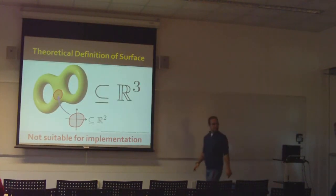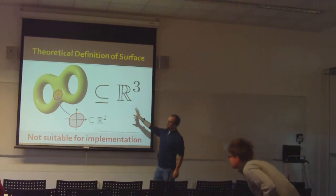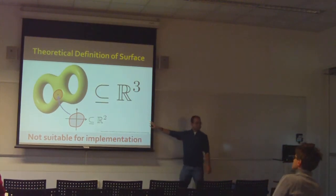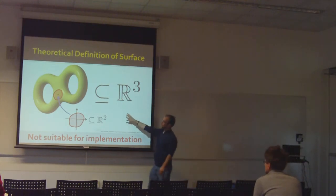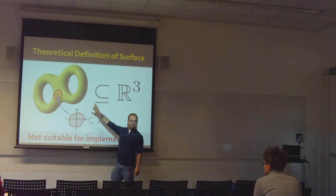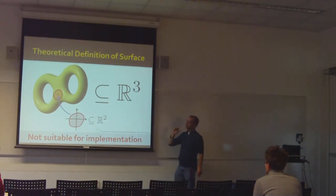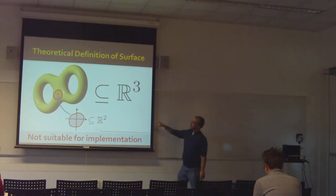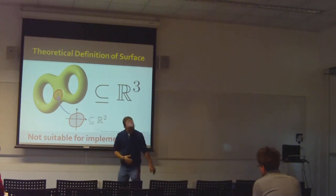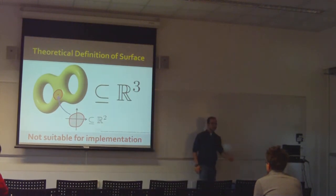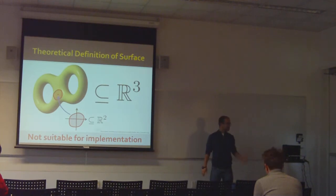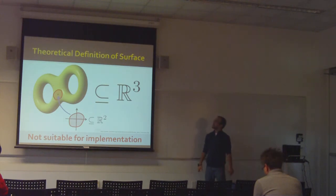You'll recall from the last couple classes that we've gone through in a lot of detail a theoretical definition of a surface. There are lots of different ways of thinking about this definition. One that I kind of like is: a surface is a subset of three-space where locally, at each point, the surface looks like two-space. At each point on this double torus, we can find some little neighborhood around our point that looks like some little neighborhood in the plane. Your homework, which hopefully will go out on Monday, will solidify this idea both on the theoretical and practical side.